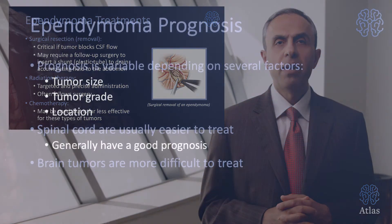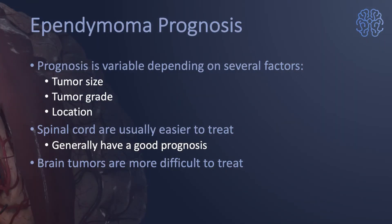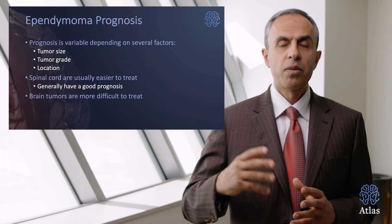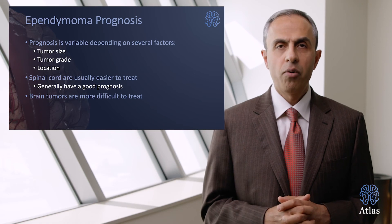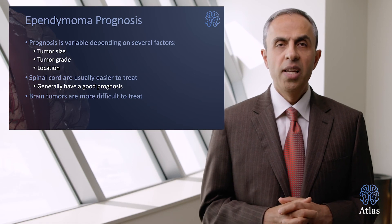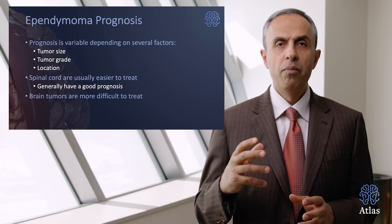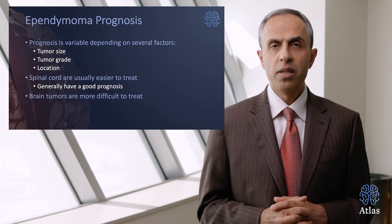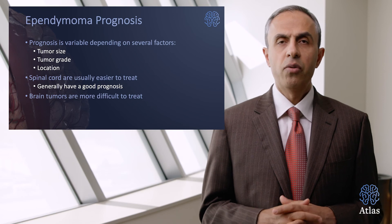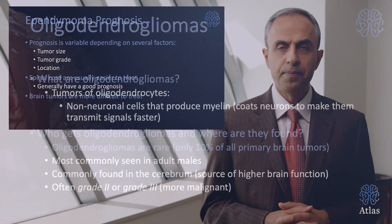What is the prognosis for ependymomas? It depends on tumor size, grade, and location. Generally, spinal cord ependymomas have a better prognosis than brain ependymomas because they can be resected more effectively.